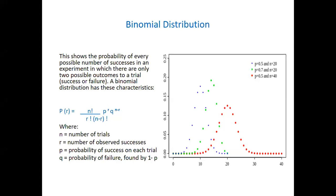Number of observed successes, probability of success on each trial, probability of failure - Q is probability of failure, which is 1 minus P, or 100% minus P. Simple.